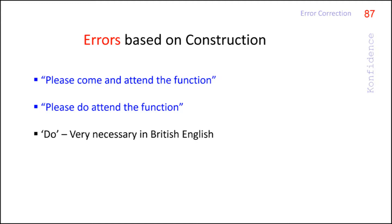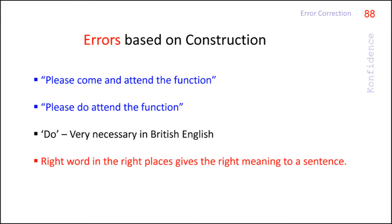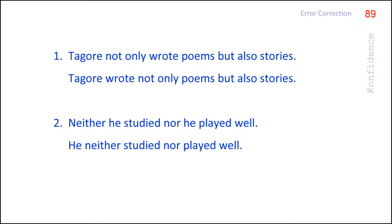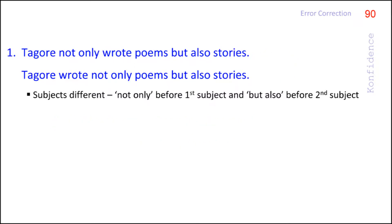This story tells us how important sentence construction is. The right word in the right place gives the right meaning to a sentence. Therefore, word order should be correct. In the first set, there are two sentences connected with 'not only...but also,' and in the second set, two sentences connected with 'neither...nor.' In the first set, let us split the sentence: 'Tagore wrote poems' and 'Tagore wrote stories,' combined using 'not only...but also.'